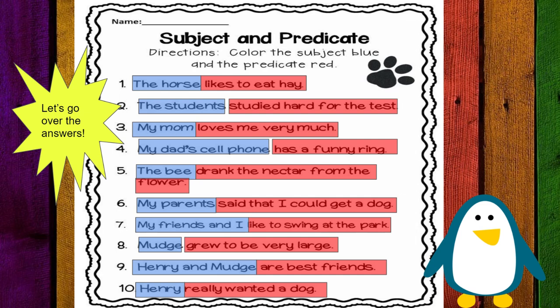Henry and Mudge are the subjects. Are best friends is the predicate. Henry really wanted a dog. Henry is the subject. Really wanted a dog is the predicate.